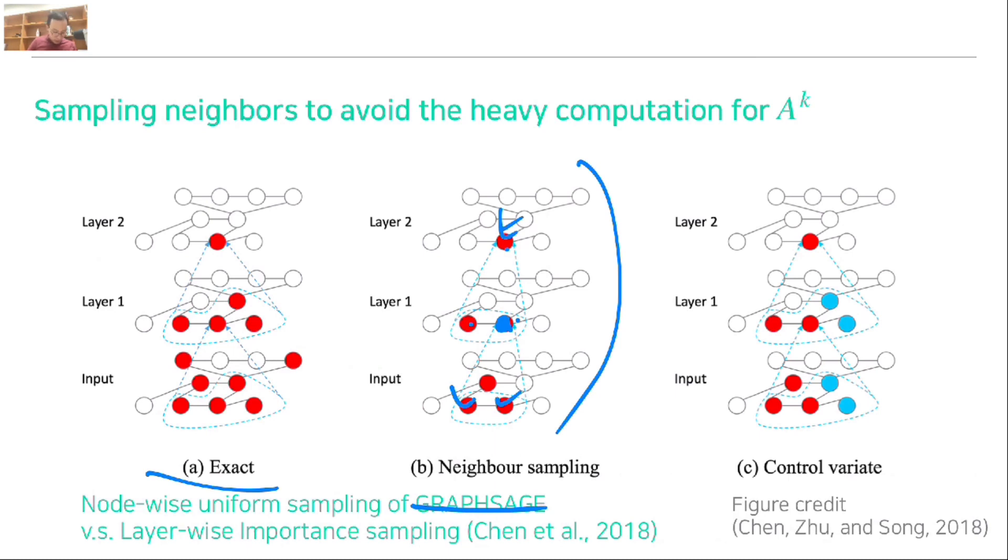Another way to sample neighbors is layer-wise importance sampling. Depending on the node importance, which could be from the node degree, when you have more neighbors you are likely to be more important. Using the importance score, sample neighbors and you expect better and efficient output. These are sampling techniques to reduce the variance when you sample neighbors using control variables.